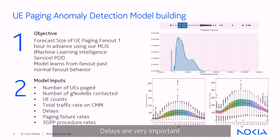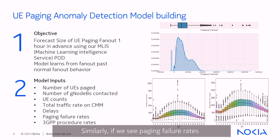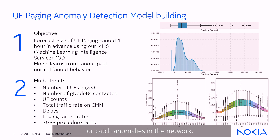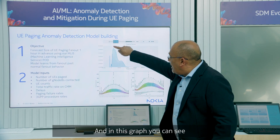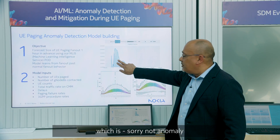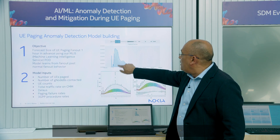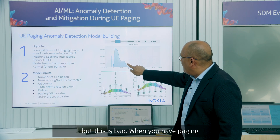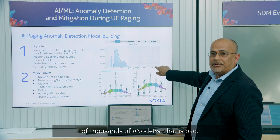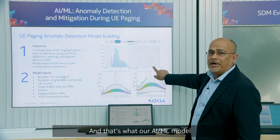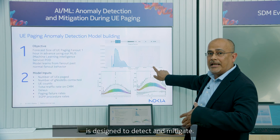Delays are very important because if delays increase, we know that there is some sort of anomaly taking place in the network. Similarly, if we see paging failure rates at certain times of the day, that helps us catch anomalies in the network. In this graph, you can see there is a base level of fanout that is always present. But when paging fanout goes to hundreds of thousands of gNodeBs, that is bad — and that's what our AIML model is designed to detect and mitigate.